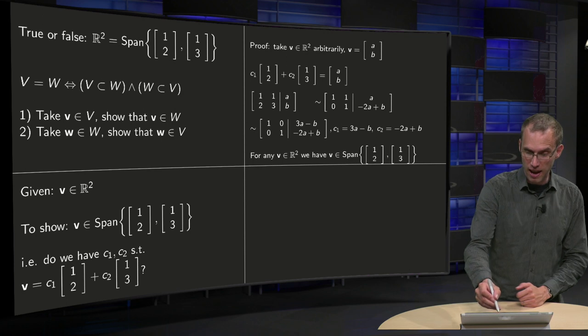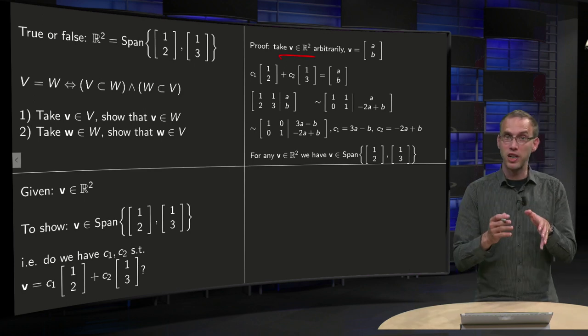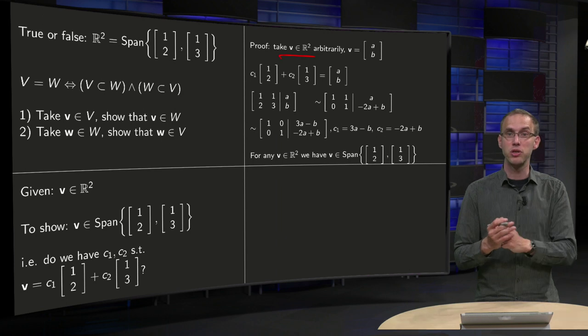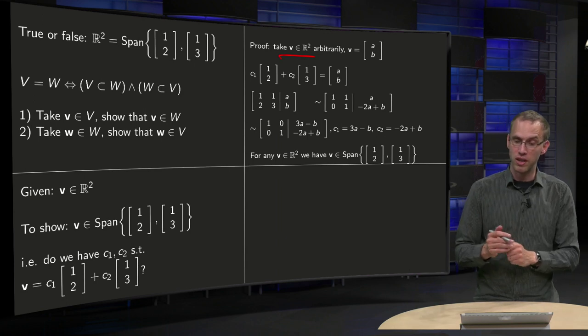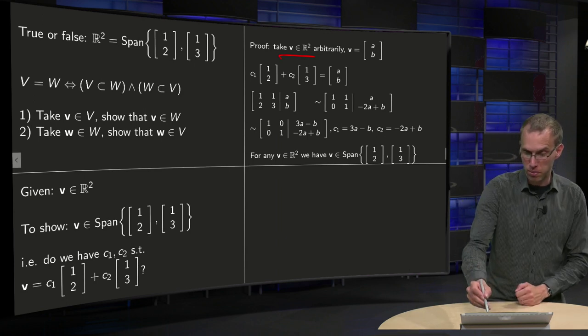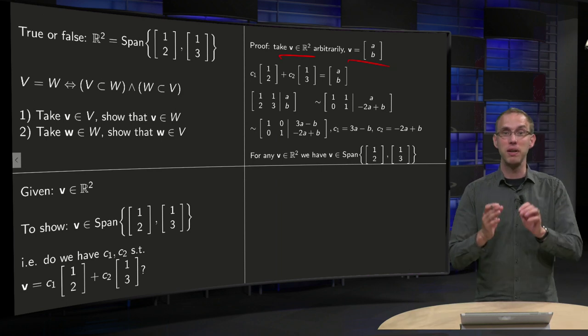So we take any v in R² arbitrarily, and here we have to show that this v is also in the span of [1,2] and [1,3]. So take for example v equals [a,b], where a and b can be any number.